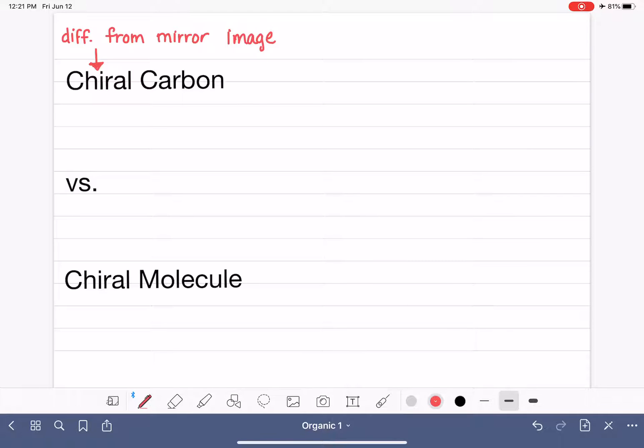A chiral carbon goes by a lot of different names. Chiral carbons could also be called chirality centers. We'll see that the chiral carbons in a molecule are often responsible for making the whole molecule chiral. Chiral carbons are sometimes called chirality centers, and they're sometimes called stereocenters, because chirality is a type of stereoisomerism.